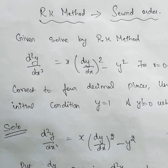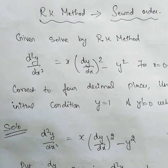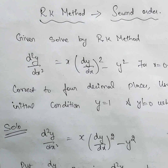Now let's see the RK method for second order. We have two methods here — one is the RK method, and the other is the Adams-Bashforth method for second order.